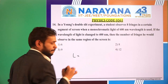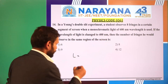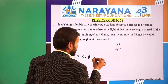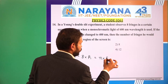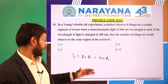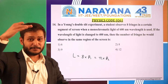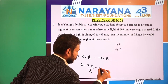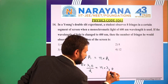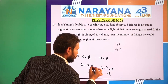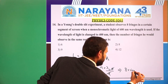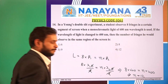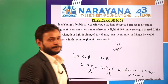The length of the screen segment is fixed. In the first case there are 8 fringes, so the length = 8β₁. In the second case it equals n·β₂. Since length doesn't change: 8β₁ = n·β₂, giving 8·(λ₁D/d) = n·(λ₂D/d). Cancelling D/d: 8 × 600 nm = n × 400 nm, so n = 12. Twelve fringes will be observed, which is option 4.